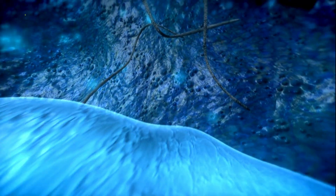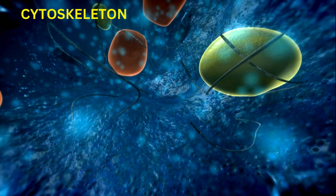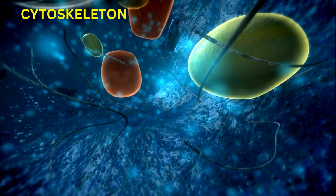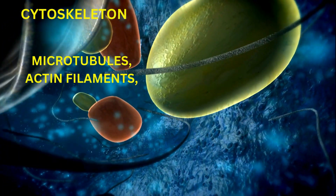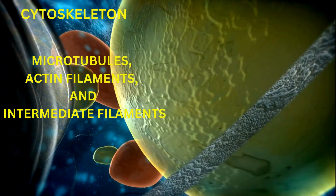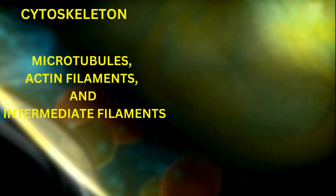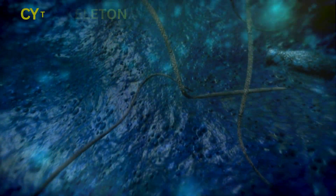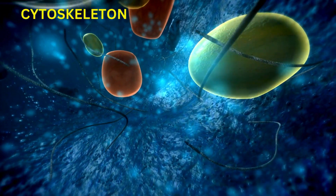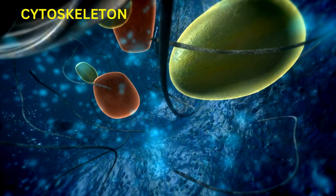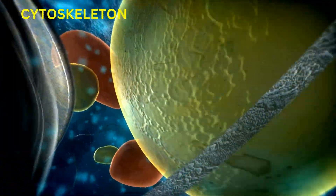Cytoskeleton Function. The cytoskeleton is a network of protein filaments — microtubules, actin filaments, and intermediate filaments — that provide structural support, maintain cell shape, and facilitate cell movement. It also plays a role in intracellular transport and cell division.